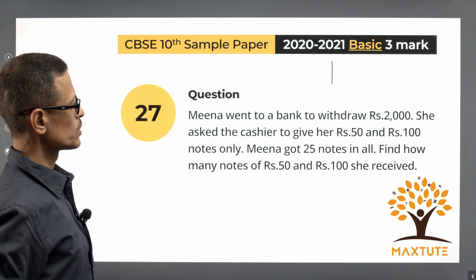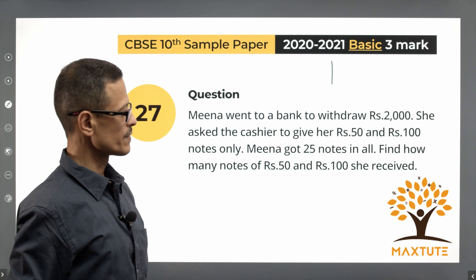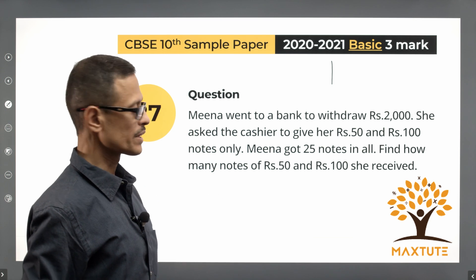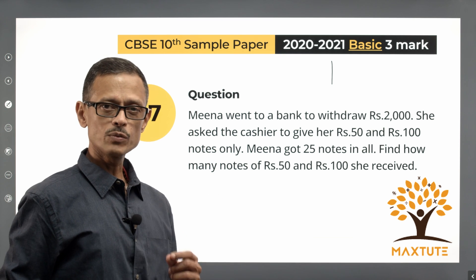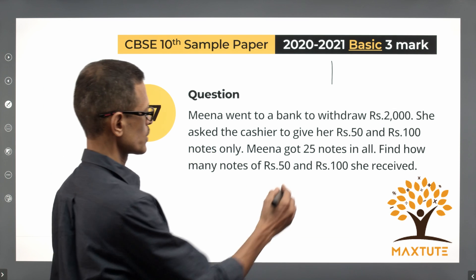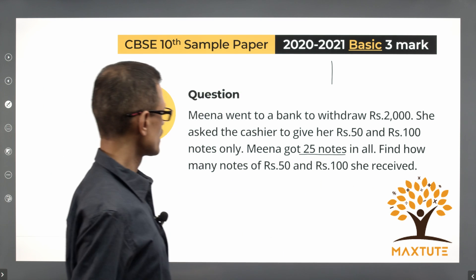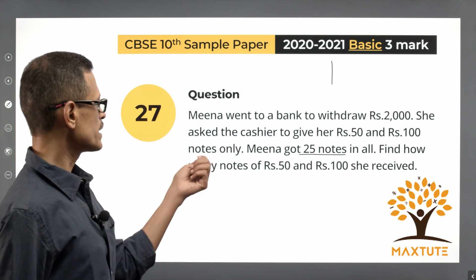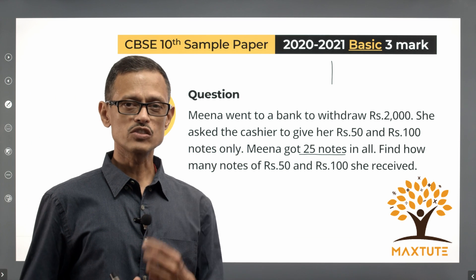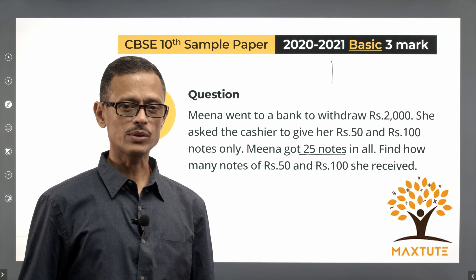Meena went to a bank to withdraw 2000 rupees. She asked the cashier to give her 50 rupee and 100 rupee notes only. Meena got a total of 25 notes in all. We need to find how many of the notes were 50 rupees and how many were 100 rupees.